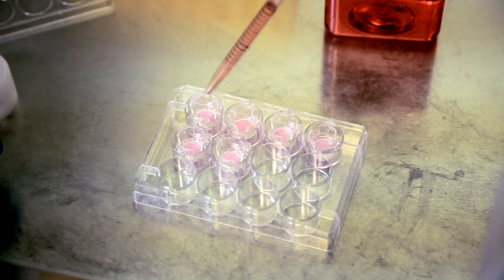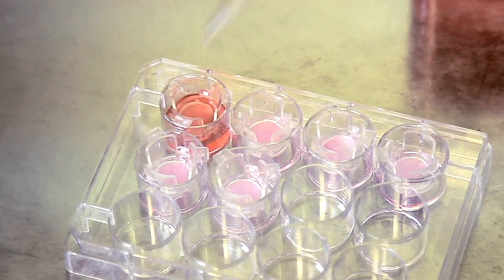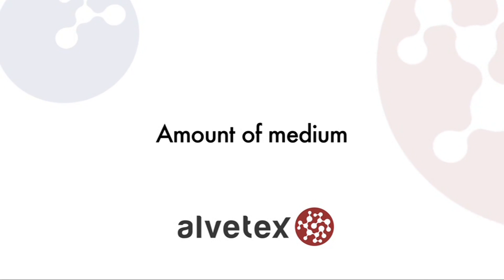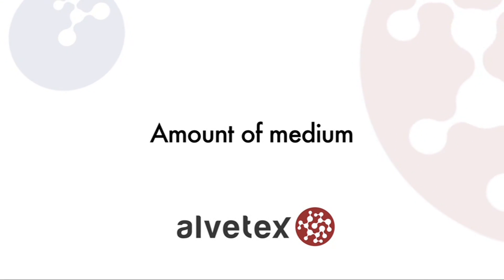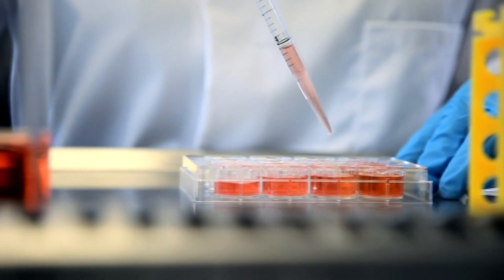After this, gently flood the wells with medium. The amount of medium to use depends on the Alvatex format you've chosen and the purpose of your experiment. If you're using a 12-well plate, you should use up to 4 milliliters of medium per well.